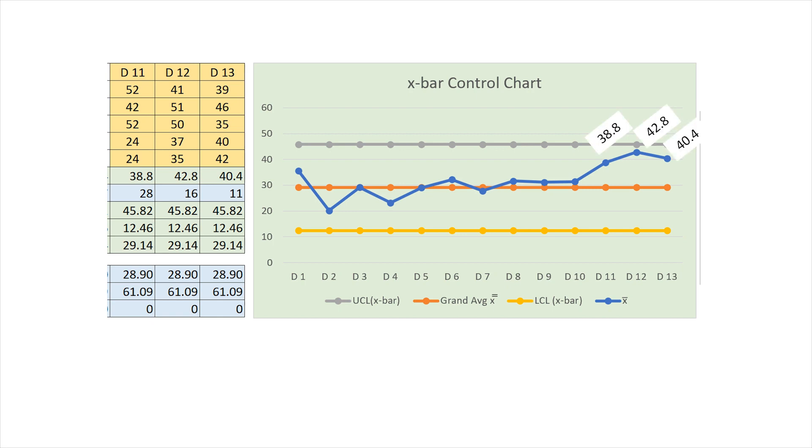Averages for days 11, 12, and 13 are respectively 38.8, 42.8, and 40.4. There is a visible shift upwards, but not enough to be a signal of special variation.